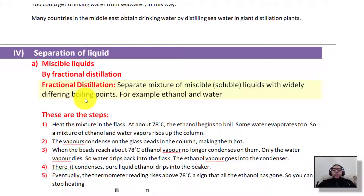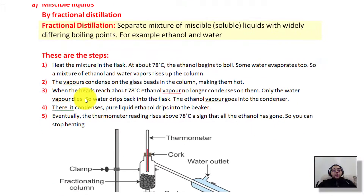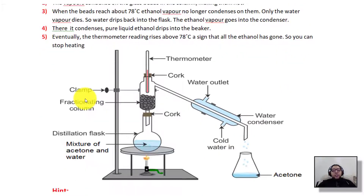In fractional distillation, we heat the liquids at different temperatures according to their boiling points. When a liquid has a higher boiling point, we heat to a higher temperature to separate that particular liquid. So we use different temperature degrees to separate each liquid from the others.